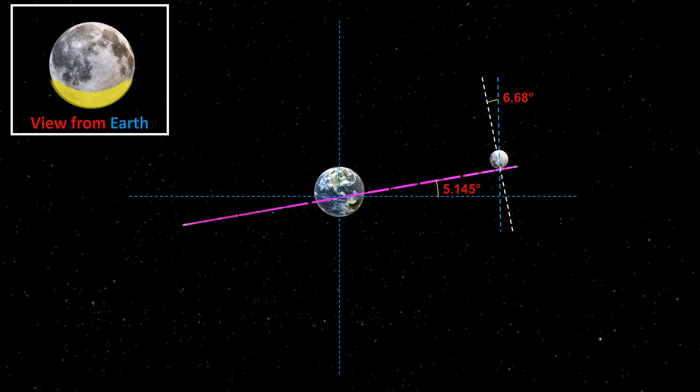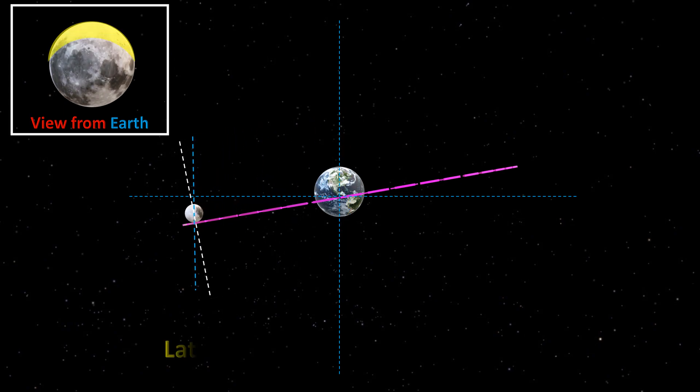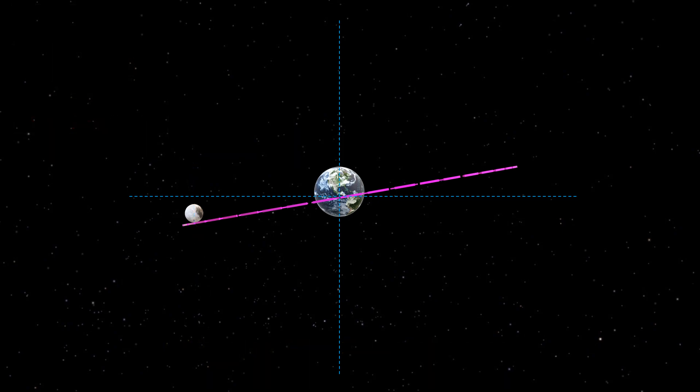From our angle, we can at one time peek under the south pole and then later in the lunar month we can peek over the north pole of the moon. This is known as latitudinal libration of the moon.